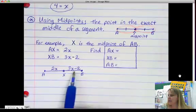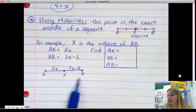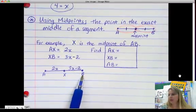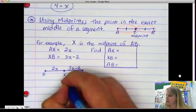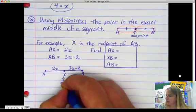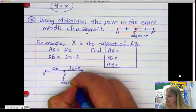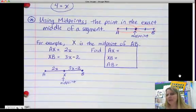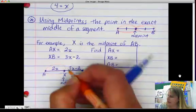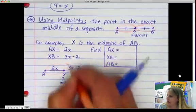So, we have to approach this problem a little bit differently. Instead of AX plus XB equals AB, which is true, but that doesn't help us. We're told that X is the midpoint, which means that it's in the exact middle.